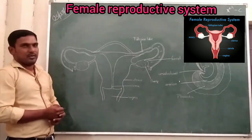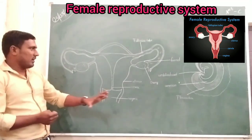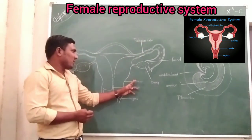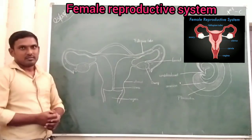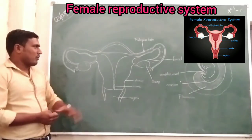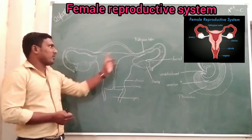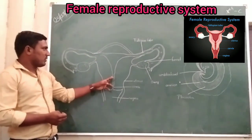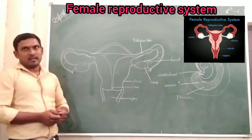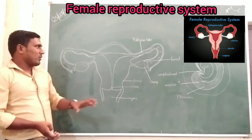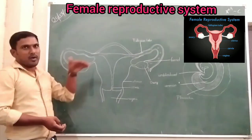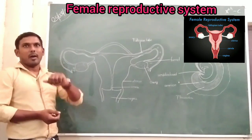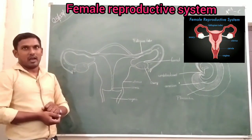Let us discuss the female reproductive system. It is mainly contained in four parts: the ovary, the fallopian tube, the uterus, and the vagina. One pair of ovaries, one pair of fallopian tubes, again the uterus, and again the vagina. This female reproductive system is located in the lower abdominal cavity.